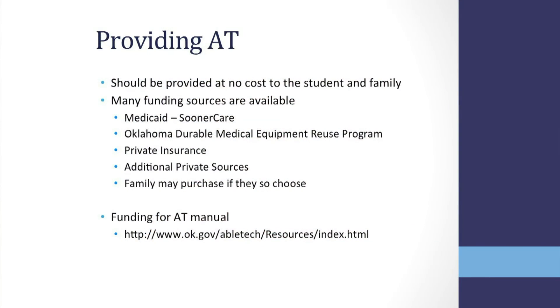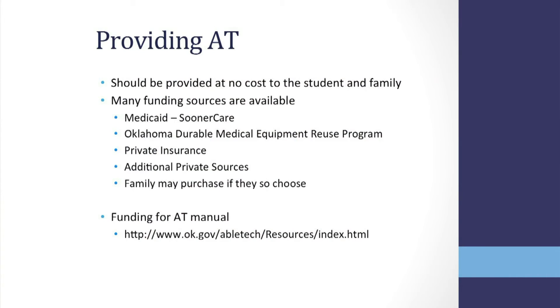The next step is providing the AT and documenting it in the IEP. The LEA is responsible for making sure the needed AT is provided at no cost to the student and family. This does not necessarily mean the school has to pay for the items. Depending on the type of AT required, there are many funding sources available to the student, including Medicaid, also known as SoonerCare in Oklahoma, the Oklahoma Durable Medical Equipment Reuse Program, private insurance, and additional private sources. The parents or guardians may also decide to purchase the AT for their child. You can view funding sources specific to Oklahoma in ABLE Tech's Funding for AT Manual found at ok.gov/abletech.